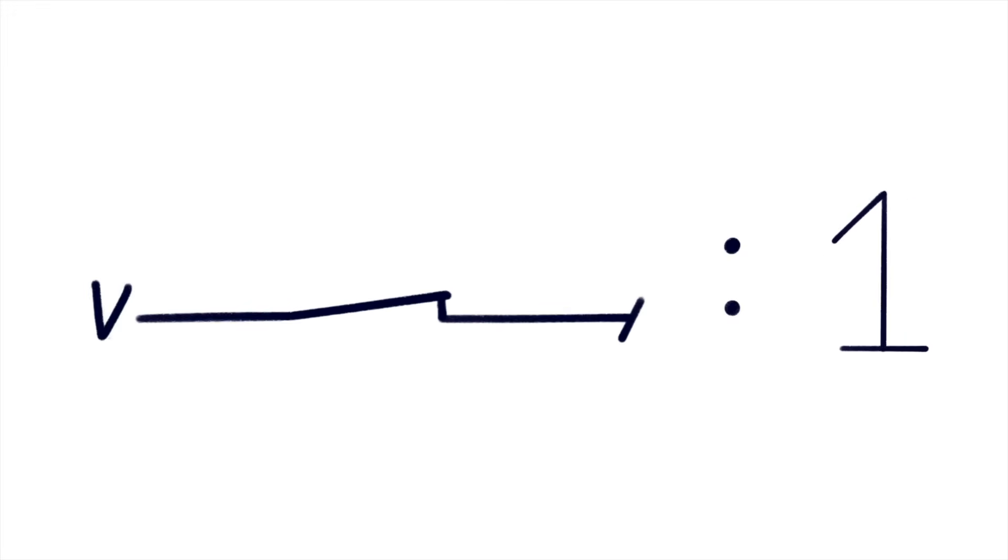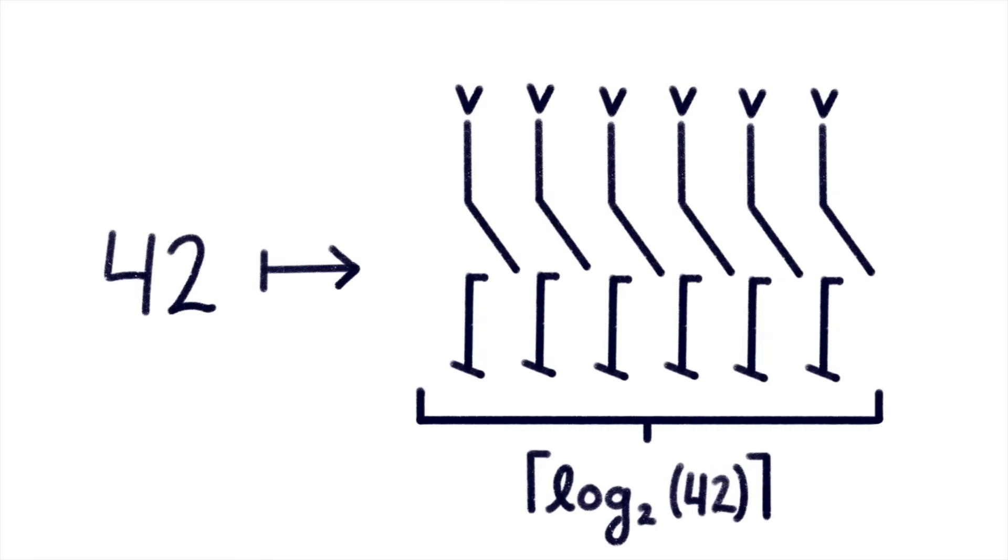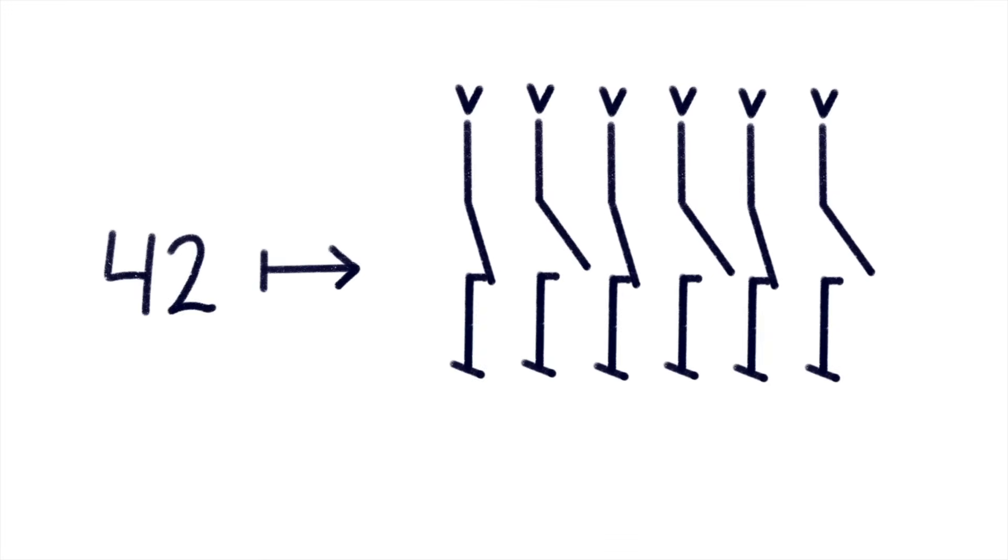In electrical engineering notation each bit is drawn as a switch icon. Storing an integer such as 42 in your computer then corresponds to electronically configuring the binary logarithm of 42 many switches inside its hardware.